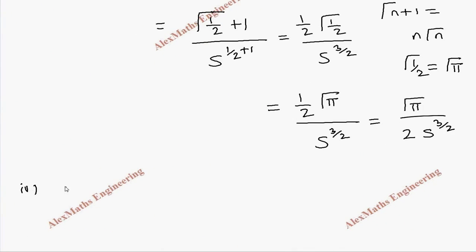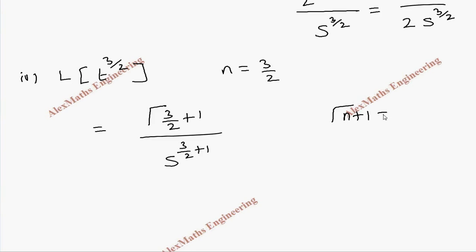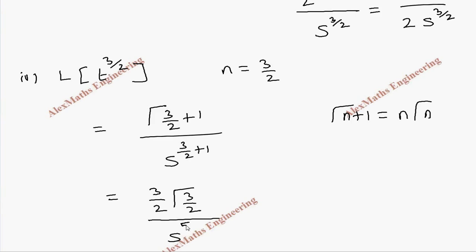For the fourth problem: Laplace transform of t to the power 3 by 2. The value of n is 3 by 2, which is not an integer, so we use the second formula. By the formula, it is gamma of 3 by 2 plus 1 divided by s to the power 3 by 2 plus 1. Applying gamma of n plus 1 equals n times gamma n, this becomes 3 by 2 times gamma of 3 by 2, divided by s to the power 5 by 2.